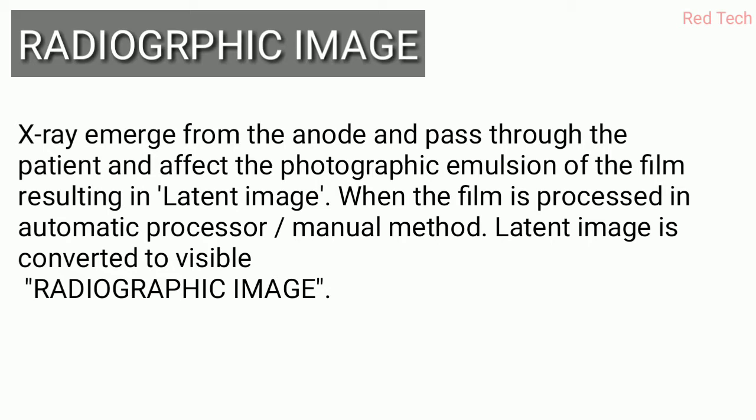What is a radiographic image? Basically, when x-rays emerge from the anode and pass through the patient, these rays affect the photographic emulsion of the film and form a latent image. This is called a temporary image — you can't see this image. When the film is processed in an automatic processor or manual method, the latent image is then converted to a visible image.